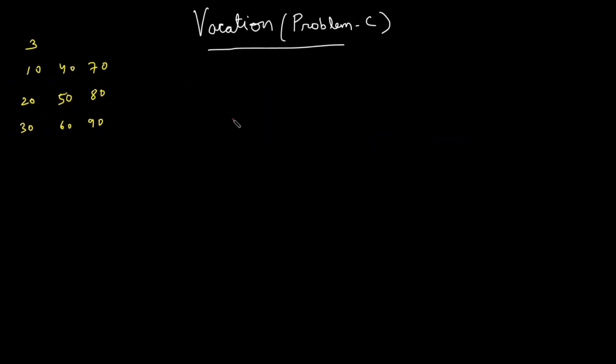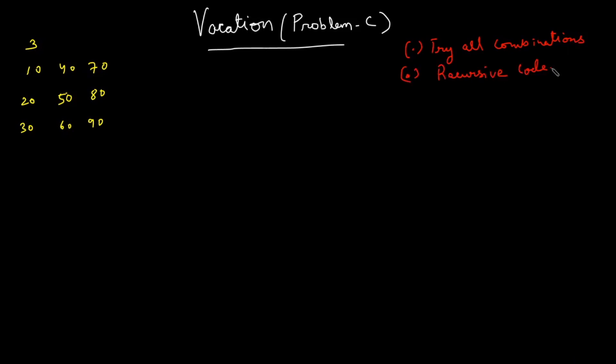So how do you approach such problems? First, try all possible combinations by writing recursive code. Recursive code is exponential in complexity because you're trying all combinations, which may not scale. The next step is to memoize the recursive solution to convert it into a dynamic programming solution. Let's perform the first step: trying all possible combinations.